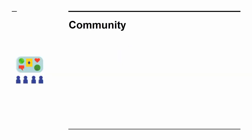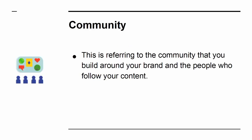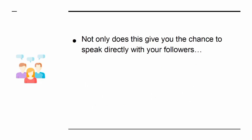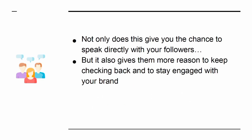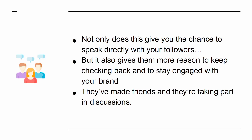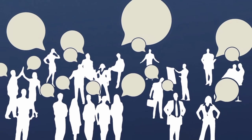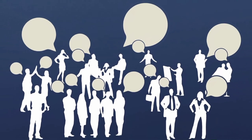The next C for influencers to learn is community. This is referring to the community that you build around your brand and the people who follow your content. Creating a thriving community is one of the most powerful things you can do as an influencer. Not only does this give you the chance to speak directly with your followers, but it also gives them more reason to keep checking back and to stay engaged with your brand. They've made friends, and they're taking part in discussions. Communities are also what make a brand feel more like a movement rather than just a cynical business.